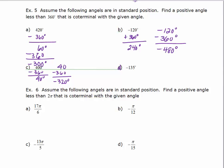For the last one, to get the positive coterminal angle, add 360 degrees, which gives 225 degrees. To find the negative coterminal angle, subtract 360 from the negative angle, giving negative 495 degrees.